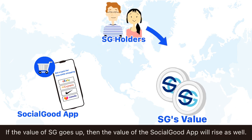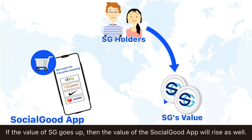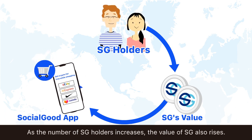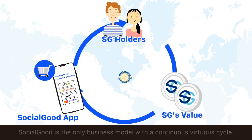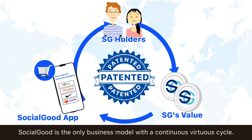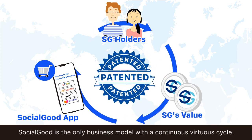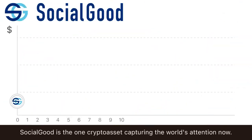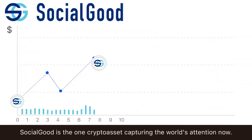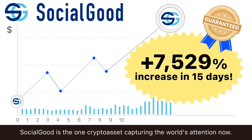If the value of SG goes up, then the value of the Social Good App will rise as well. As the number of SG holders increases, the value of SG also rises. Social Good is the only business model with a continuous, virtuous cycle. Social Good is the one crypto asset capturing the world's attention now.